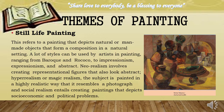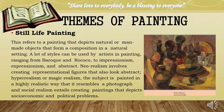Last but not the least is still life painting. This refers to a painting that depicts natural or man-made objects that form a composition in a natural setting. A lot of styles can be used by artists in painting, ranging from Baroque and Rococo to Impressionism, Expressionism, and Abstract. Neorealism involves creating representational figures that also look abstract. Hyperrealism or magic realism — the subject is painted in a highly realistic way that resembles a photograph. And social realism entails creating paintings that depict socioeconomic and political problems.